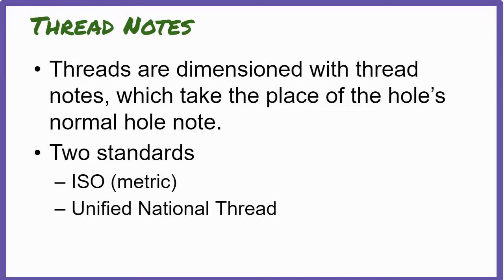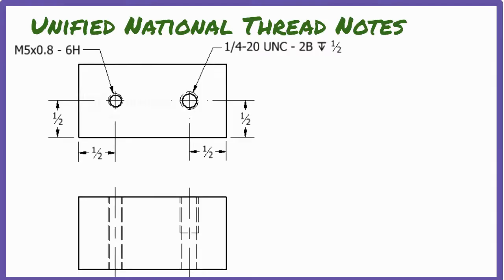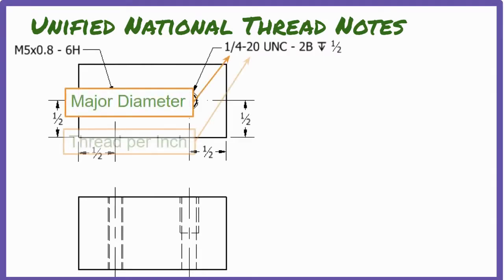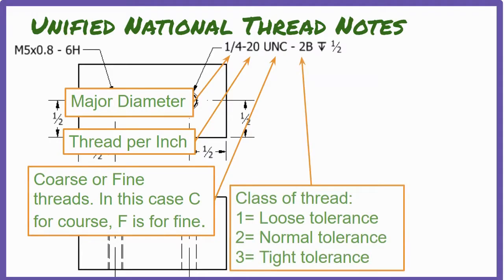There are many different sets of standards when it comes to thread patterns, but the two most commonly used threading standards are ISO, which are metric thread patterns, and unified national threads, which are US customary thread patterns. In a unified national thread note, the first number is the major diameter of the hole. The second number is the TPI, or number of threads per inch. A higher number means more, smaller threads closer together, and a lower number means fewer, larger threads spaced farther apart. The letters UN indicate that these are unified national threads, and the letter C indicates the designation coarse, but you might also sometimes see F for fine.